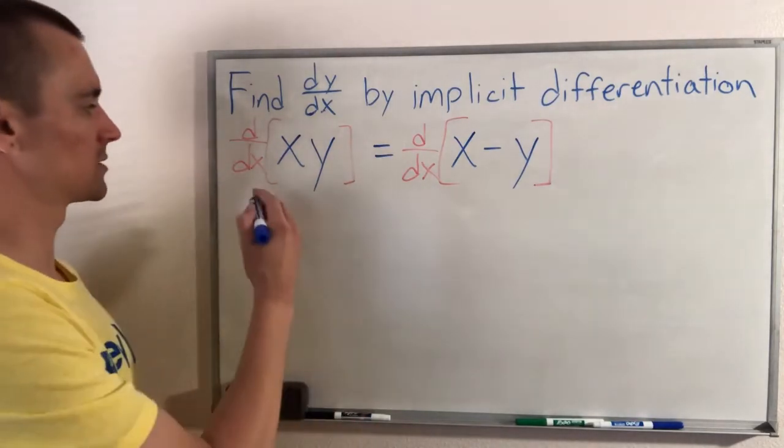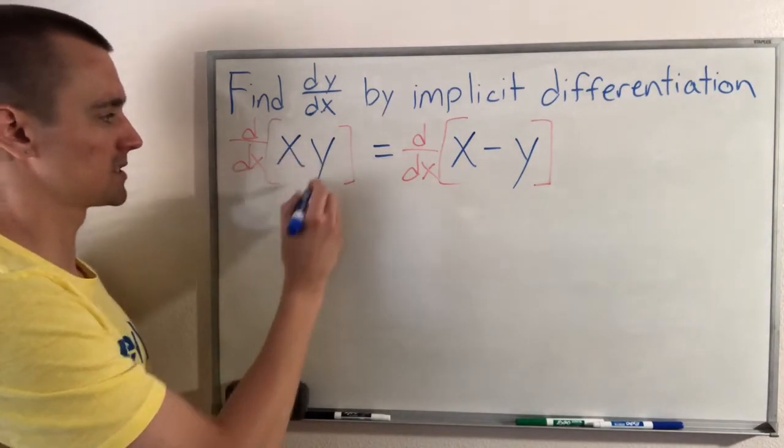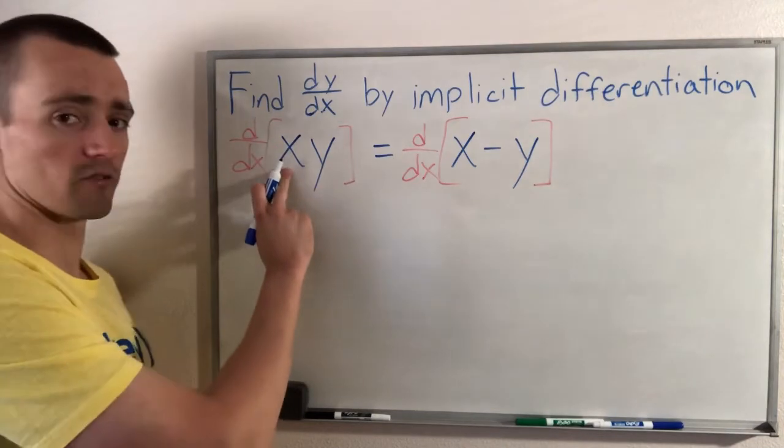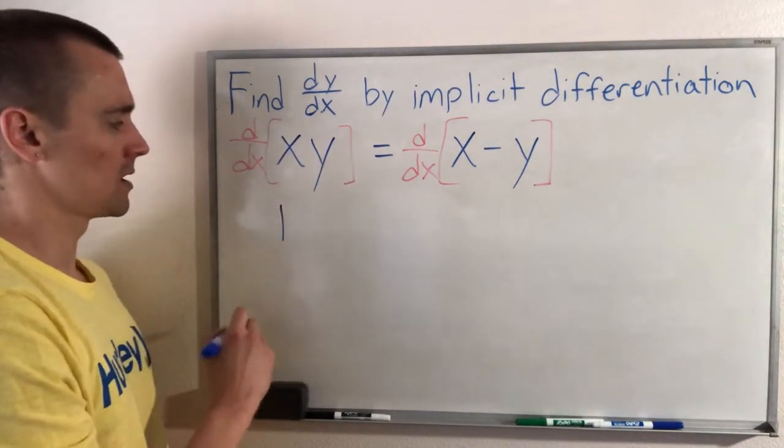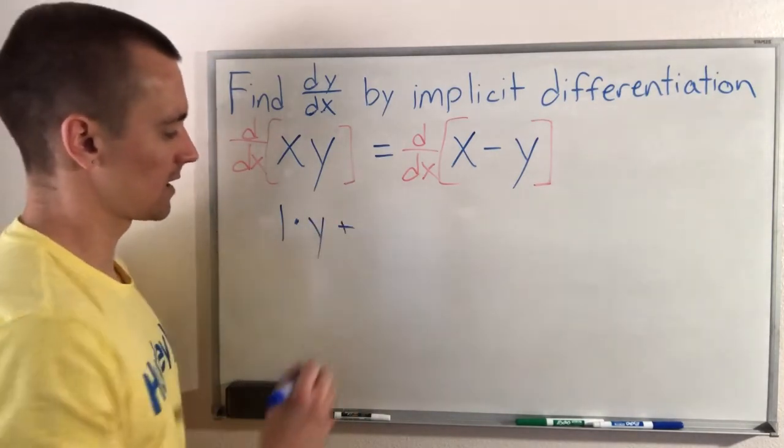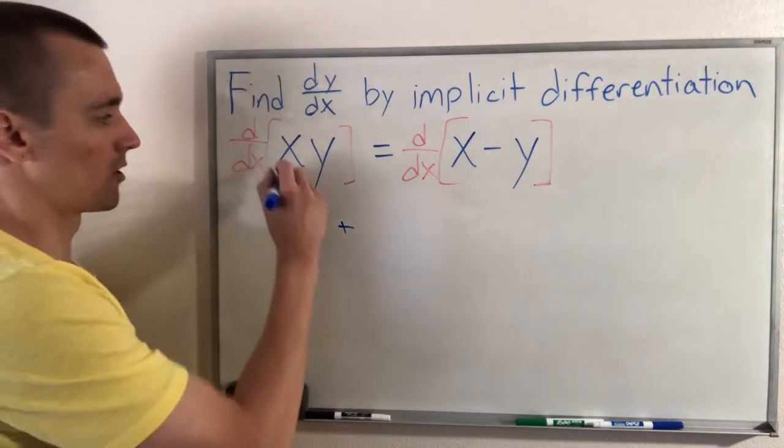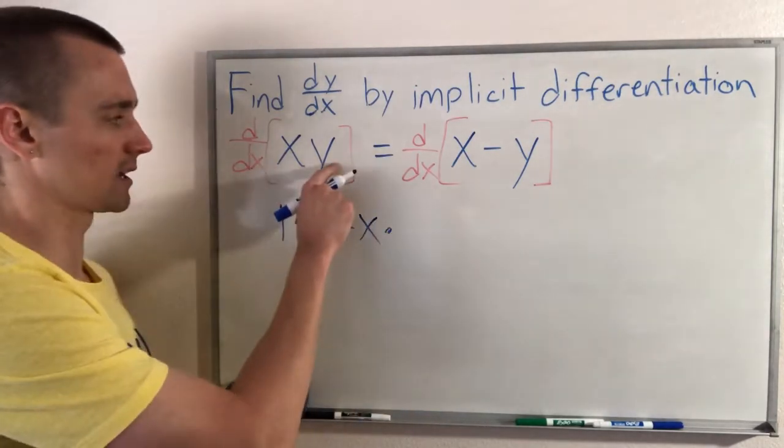So to use the product rule, we just would say the derivative of the first times the second. So the derivative of x with respect to x is just one, right? And then we're going to multiply that by the second function. And then we're going to add the first. So x without taking the derivative times the derivative of the second.